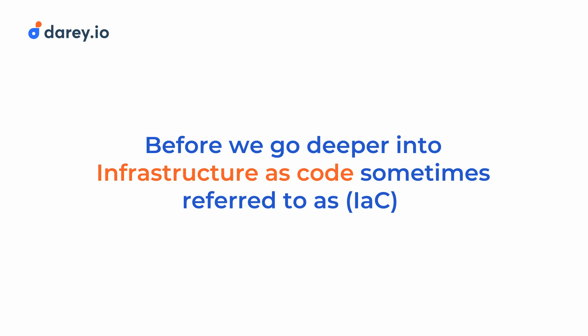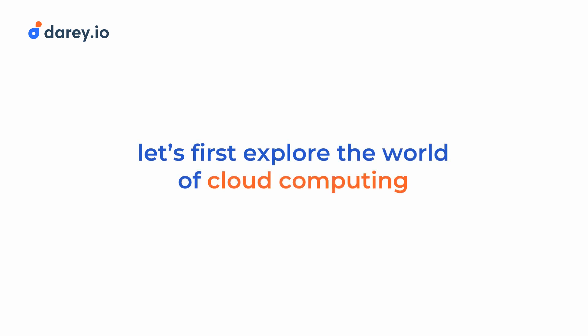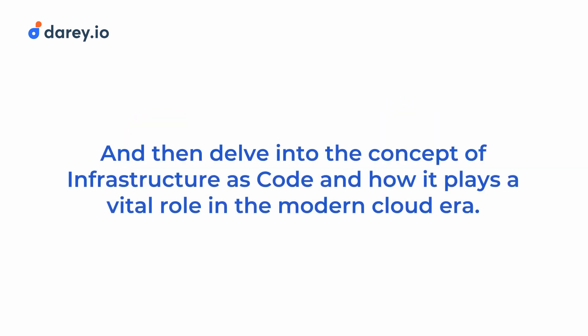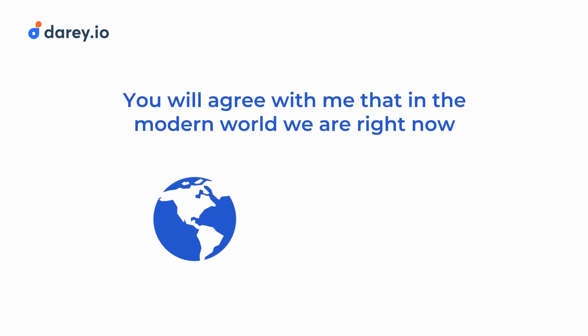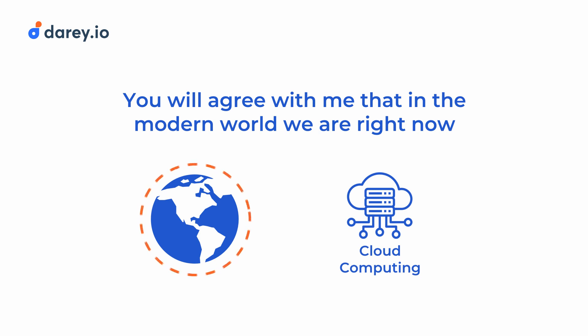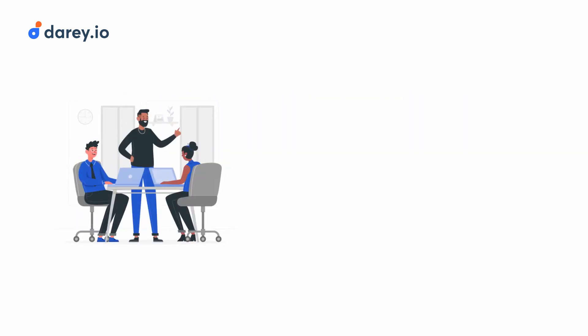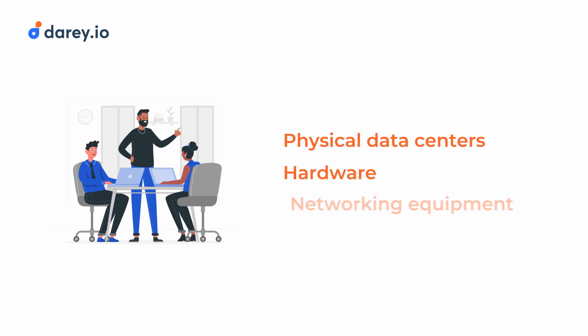Before we go deeper into infrastructure as code, sometimes referred to as IAC, let's first explore the world of cloud computing, including private and public cloud offerings, and then delve into the concept of infrastructure as code. In the modern world, cloud computing has revolutionized the way businesses and developers manage their IT infrastructure. In the traditional IT setup, organizations had to invest heavily in physical data centers, hardware and networking equipment.